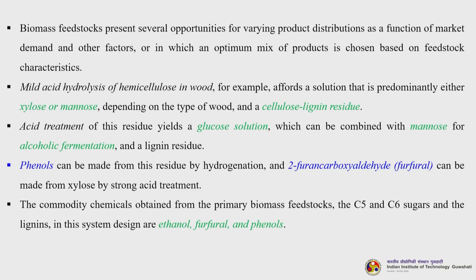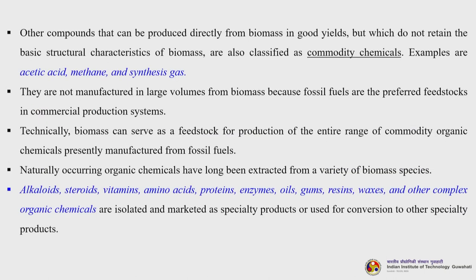Acid treatment of the residue yields a glucose solution which can be combined with mannose for alcoholic fermentation, and a lignin residue. Phenols can be made from this residue by hydrogenation, and furfural — a furan carboxaldehyde — can be made from xylose by strong acid treatment. The commodity chemicals obtained from primary biomass feedstocks — C5 and C6 sugars and lignins — are ethanol, furfural and phenols.